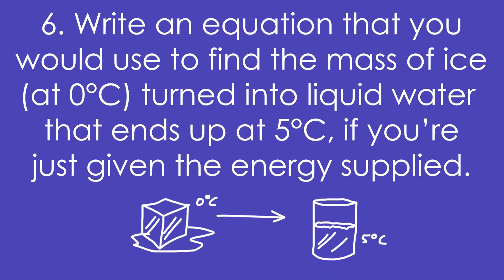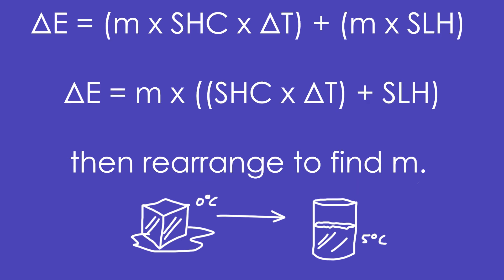Question 6: Write an equation to find the mass of ice at 0°C that's turned into liquid water ending at 5°C, given only the energy supply ΔE. This was actually a GCSE paper question. The energy going in is not only melting the ice — that's m × SLH — but it's also raising the temperature to 5°C, so it's plus m × SHC × ΔT. To find the mass, factorize and rearrange.